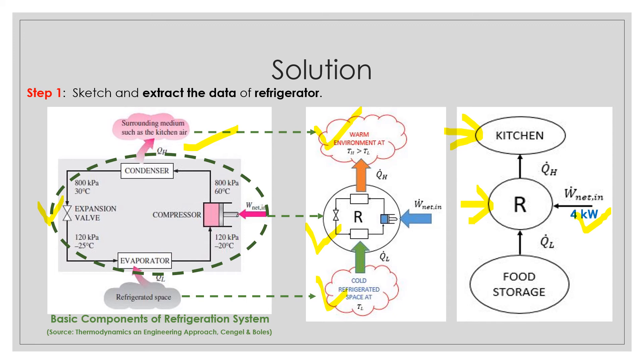And also provide the information of the 4 kW for work net in, and the 480 kJ per minute for the area of Q_L. And for this question, we will use these sketches to assist us to solve the entire problem.